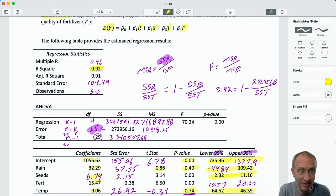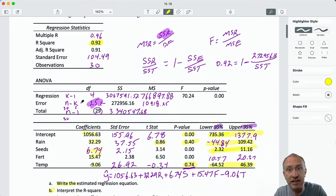So I always encourage my students to interpret these numbers in the most specific context of the problem as possible. So our independent variables - the amount of rain that we get, the density of seeds that we disperse, the quality of the fertilizer and the temperature - together capture 92% of the variation in wheat yield. So now there's no ambiguity in what I'm talking about. I'm describing very explicitly all of those variables. So that's how I would interpret here the R-squared.